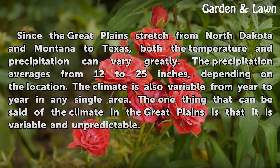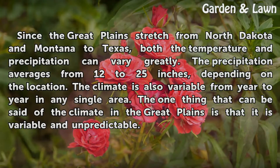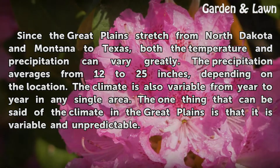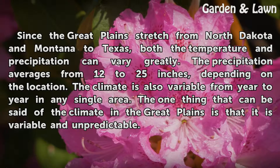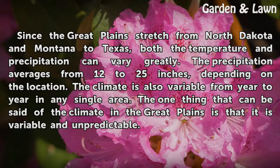Since the Great Plains stretch from North Dakota and Montana to Texas, both the temperature and precipitation can vary greatly. The precipitation averages from 12 to 25 inches, depending on the location. The climate is also variable from year to year in any single area. The one thing that can be said of the climate in the Great Plains is that it is variable and unpredictable.